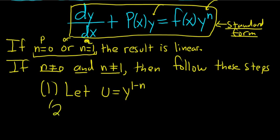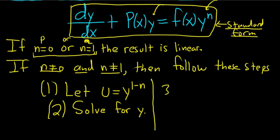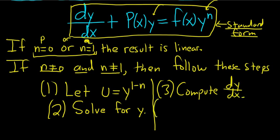Step 2: you want to solve for y. Some people do these steps a little bit differently — I like these steps, these are the ones that I use, it makes it easier. Step 3: compute dy/dx. It's not necessary to write this out explicitly, but this is where du/dx comes from. A common mistake I've seen is that people omit the du/dx because they forget about it, and then you can't finish the problem.